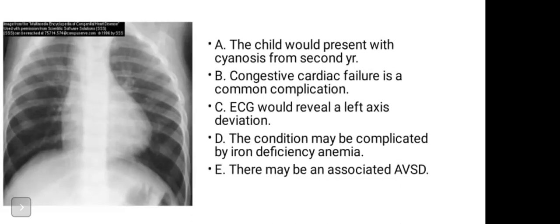The ECG will show a left axis deviation — he answered correctly from the last session. When we listed the four parameters of TOF, we said it was right ventricular hypertrophy, which by our rule of thumb should equate to a right axis deviation. But here they said left, so we know it's false — they are just trying to trick us.